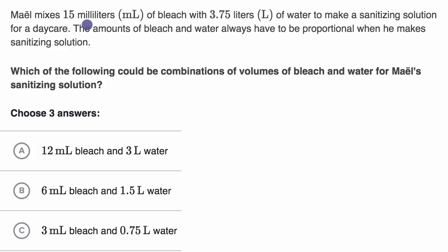We're told that Mael mixes 15 milliliters of bleach with 3.75 liters of water to make a sanitizing solution for a daycare. The amounts of bleach and water always have to be proportional when he makes the sanitizing solution. Which of the following could be combinations of volumes of bleach and water for Mael's sanitizing solution?